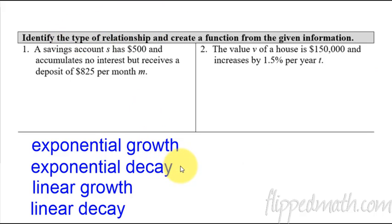You might want to put on the side of your notes, maybe off the left, the type of relationships. There's four different choices we could have: exponential growth, exponential decay, linear growth, or linear decay. So basically, is it exponential or linear? And then once you know that, is it getting bigger or is it getting smaller? That's what we're looking for.